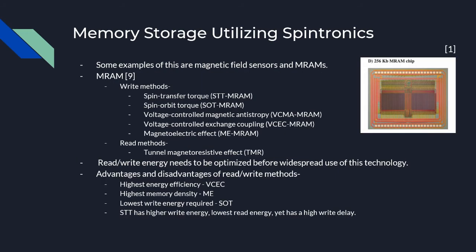Another application of spintronics is memory storage. Two examples of this are magnetic field sensors, which detect the magnetic field in a material, and MRAMs, which are non-volatile memory modules utilizing electron spin instead of electron charge. MRAM has multiple different write methods and one read method: the tunnel magnetoresistive effect, which is based on the principle of how a head reads the platter of a hard drive using the GMR effect. The different write methods include the spin transfer torque method, or STT, which is the oldest and least energy efficient.